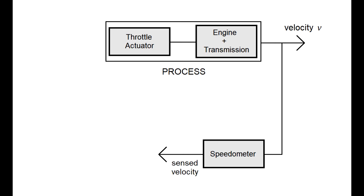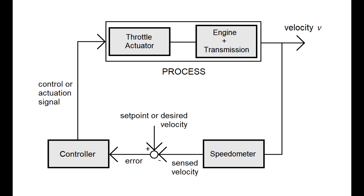The sensed speed the speedometer provides is compared with a set point or desired speed to generate an error term. This error term is then fed into a controller which generates an actuation signal to drive the throttle and thus we have a feedback loop.